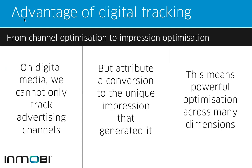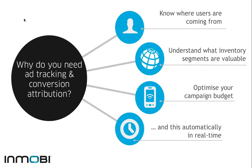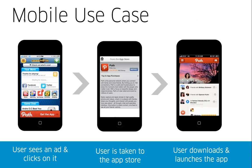Tracking conversions on mobile will allow you to know exactly where your users and customers are coming from, understand which inventory segments are the most valuable for your campaign, and optimize your spend to the most valuable inventory segments — and this can be done automatically and in real time. To take a specific example, we'll focus on mobile going forward.